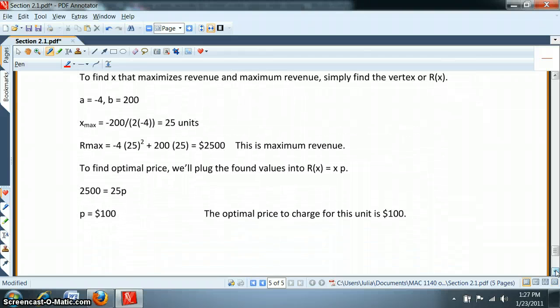Or, this is even easier. If we recall that the revenue equals X times P, so if we know the maximum revenue and we know X of the maximum, we can plug both in to figure out what that optimal price is. And that's exactly what we do here.